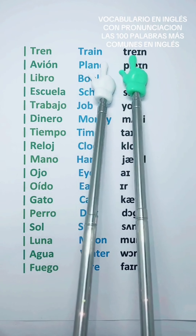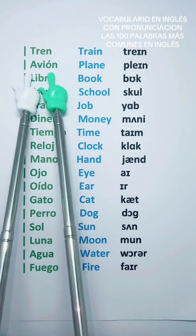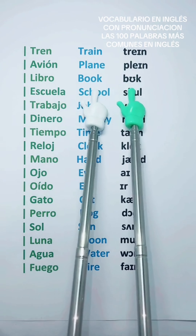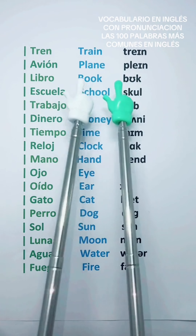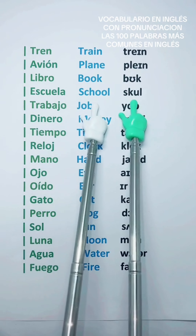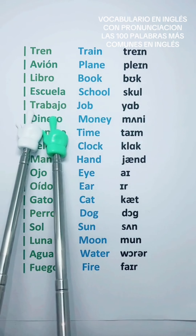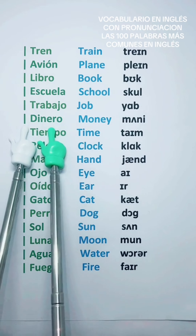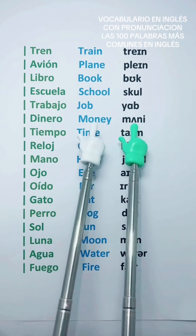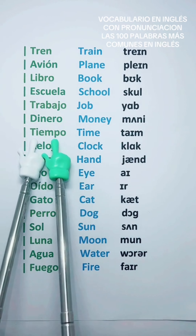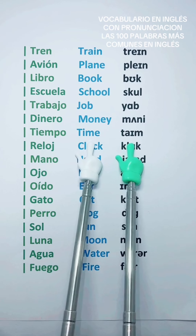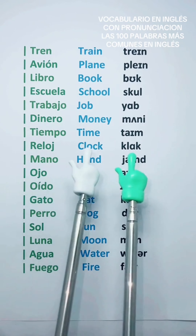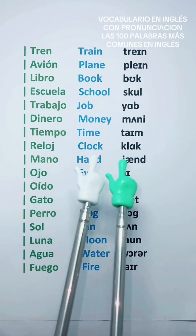Tren — Train. Avión — Plane. Libro — Book. Escuela — School. Trabajo — Work. Dinero — Money. Tiempo — Time. Reloj — Clock.